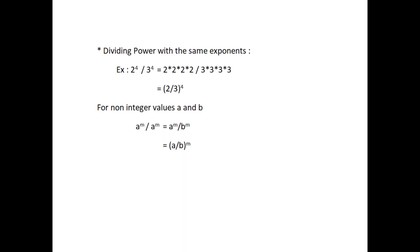Dividing powers with the same exponents. For example, 2 to the power 4 divided by 3 to the power 4 equals 2 by 3 whole to the power 4. In general, a to the power m divided by b to the power m equals a divided by b to the power m.